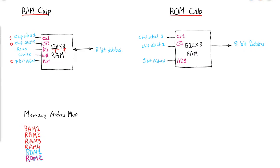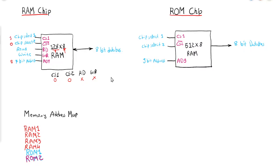Now let us prepare the function table. We consider CS1 and CS2 along with the read/write input. In the first case, if CS1 and CS2 are both 0, then whatever the value of read/write, the RAM chip will be in a high impedance state — that is, a disconnected state.